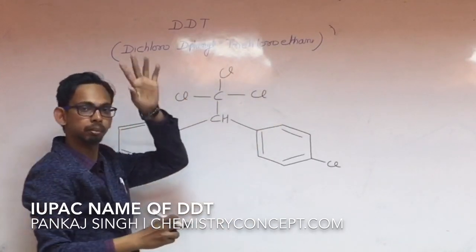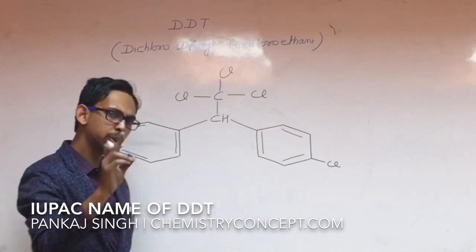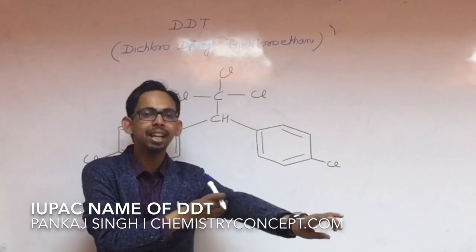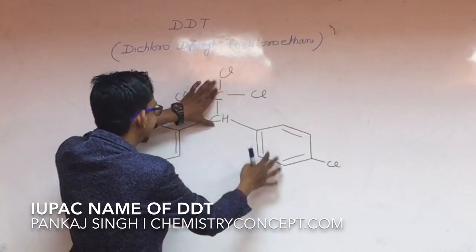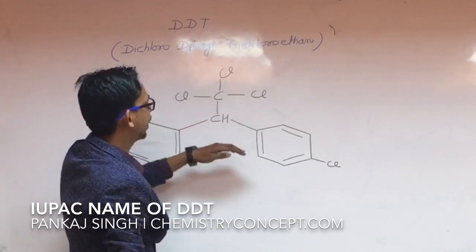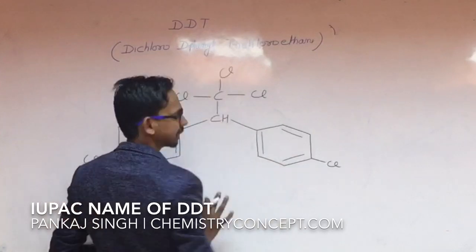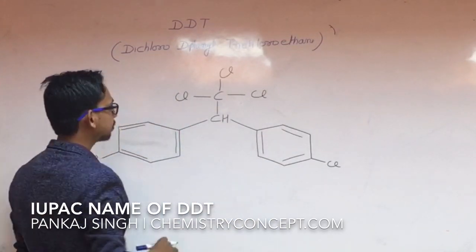Now there are two different ways by which the name of DDT is written. First way: it is assumed that ethane is the main compound and these benzene and chlorine are the side chains. Second way of naming: it is assumed that these benzene are the main compounds and ethane is the side chain. But same difference.